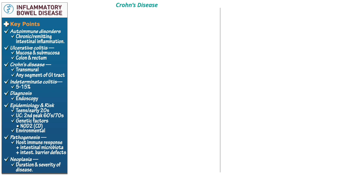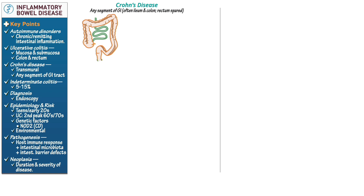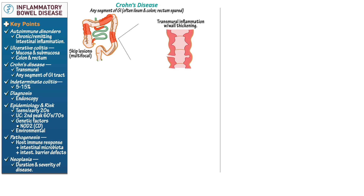Now let's start our diagram with Crohn's disease. Indicate that the so-called skip lesions can affect any segment of the GI tract, but most commonly involve the ileum and colon, and the rectum is usually spared. Skip refers to its discontinuous pattern. Then draw a portion of the GI tract in cross-section to show transmural inflammation with wall thickening.